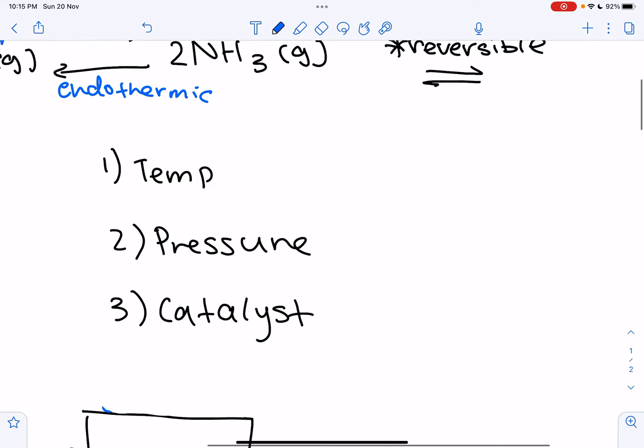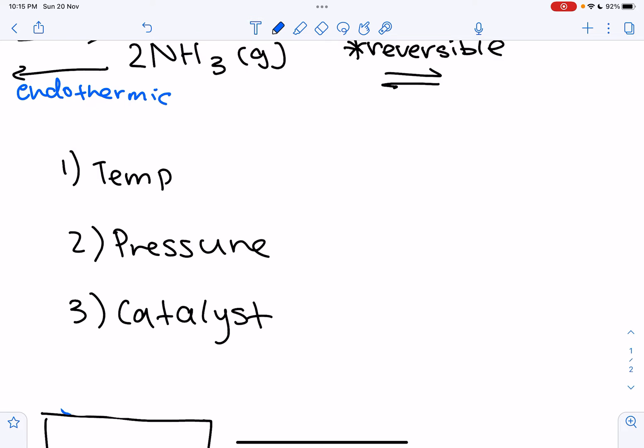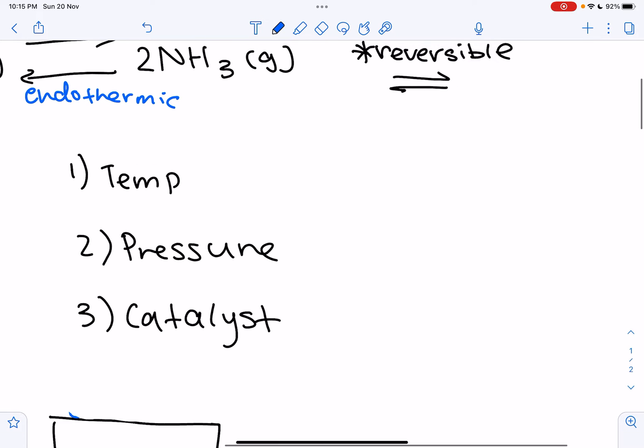Next up, let's look at the different conditions we need for the Haber process. So first up, the temperature. So the Haber process has a 450 degrees Celsius temperature. So this is really important, so make sure you remember this, these exact numbers.